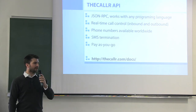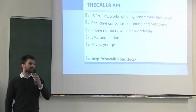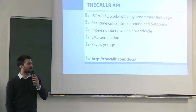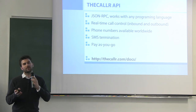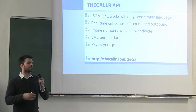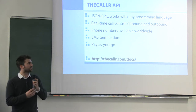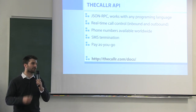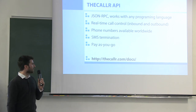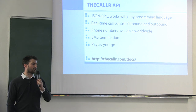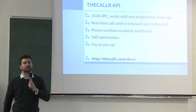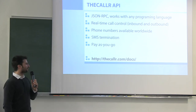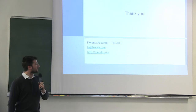A word about our API. We use the JSON-RPC technology — it's very easy to implement in any programming language. We offer real-time call control, which means you can build any IVR or inbound or outbound calling system. It's very easy to use. We provide phone numbers worldwide and SMS termination as well, so you can call or receive calls anywhere in the world. And obviously, we are a pay-as-you-go model like every cloud service — you only pay for what you use. The documentation is not complete yet, but you can check it tomorrow.